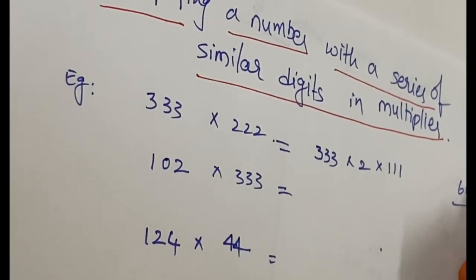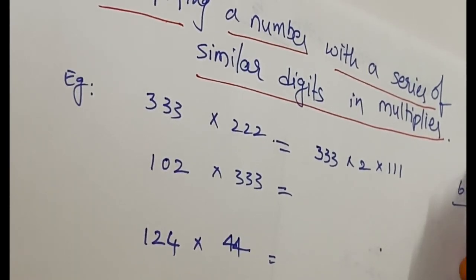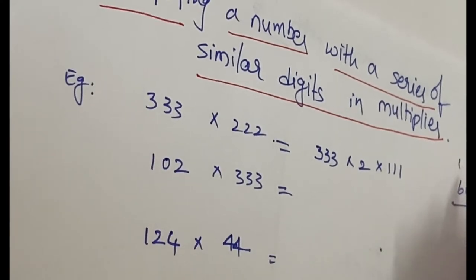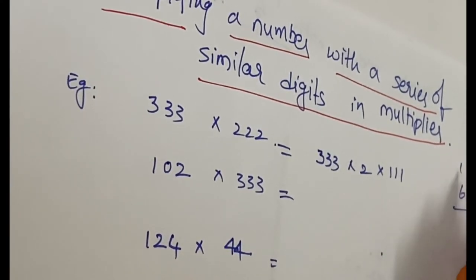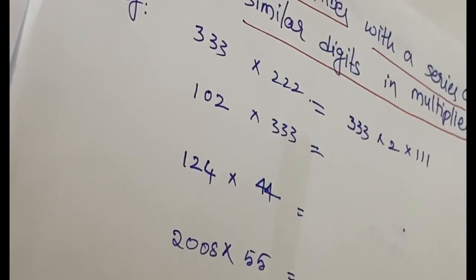Units place as it is, then we have to add 6 plus 6 equals 12. One here. Next, 6 plus 6 plus 6 equals 18, plus 1 is 19. Next, 6 plus 6 equals 12, plus 1 is 13. Next, 6 plus 1 equals 7. So this is the answer.